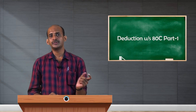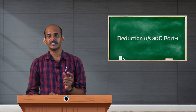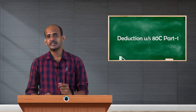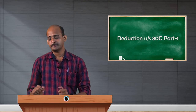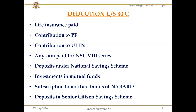In this series, starting from Section 80C to 80U, various deductions are available. In the coming videos, I will be explaining them one by one. Today I will take up deductions under Section 80C. Section 80C is for the common man. A person in the middle income group will have to spend income for different purposes, and such means are simple and available to almost all people in society.